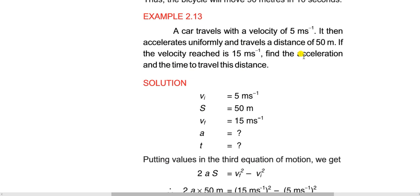The car is moving and the distance is 50 meters. We have to find two things: acceleration and time period. We will use the third equation of motion to find acceleration. We have vf, vi, s, and a — we will easily find it.